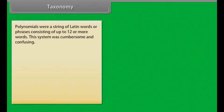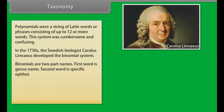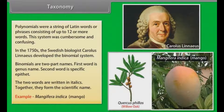Polynomials were a string of Latin words and phrases consisting of up to 12 or more words. This system was cumbersome and confusing. In the 1750s, the Swedish biologist Carlos Linnaeus developed the binomial system. Binomials are two-part names: the first word is the genus name, the second word is the specific epithet. The two words are written in italics. Together they form the scientific name. Example: Mangifera indica — Mango.